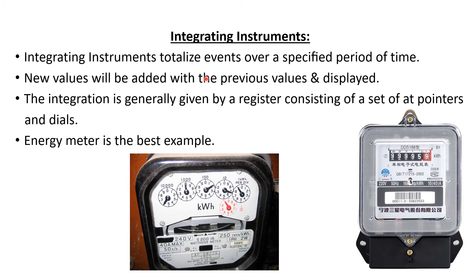Now let us discuss about integrating type instruments. Integrating means there is a process of addition. Integrating instruments are the type of instruments that totalize the events or the quantity being measured for a specific period of time. Integrating instruments indicate an integrated value, meaning new values are added with the existing value. One of the major examples for integrating type instruments are energy meters.